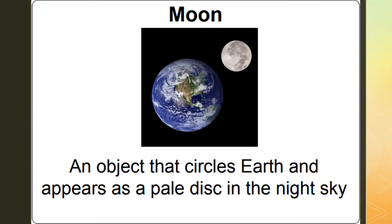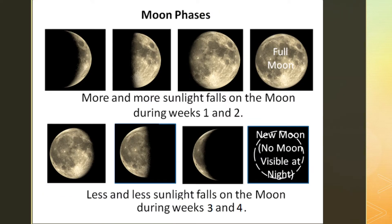The moon is an object that circles the Earth and appears as a pale disk in the night sky. We can observe and record how the moon's appearance changes over time. The moon goes around the Earth about once a month, approximately 29 and a half days, in relation to the sun, which changes how much sunlight falls onto the face of the moon.